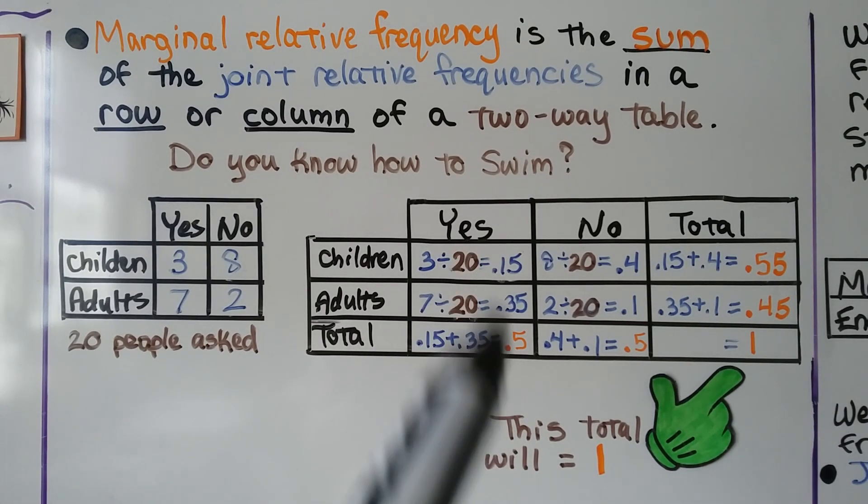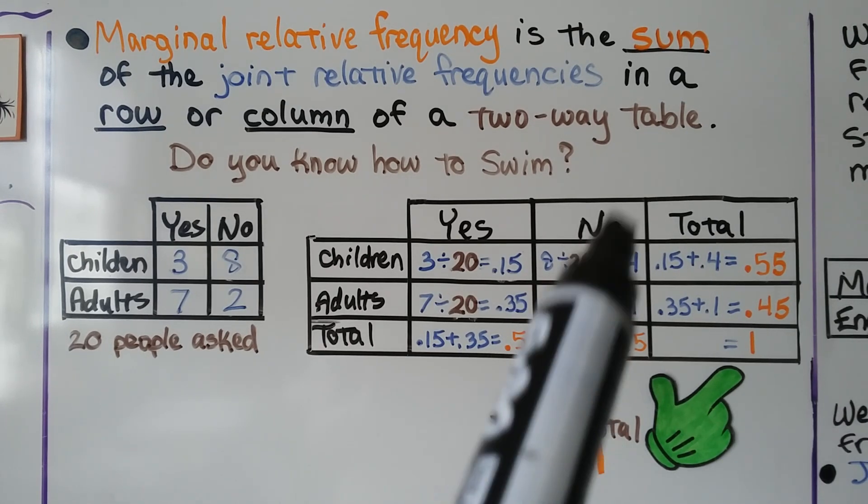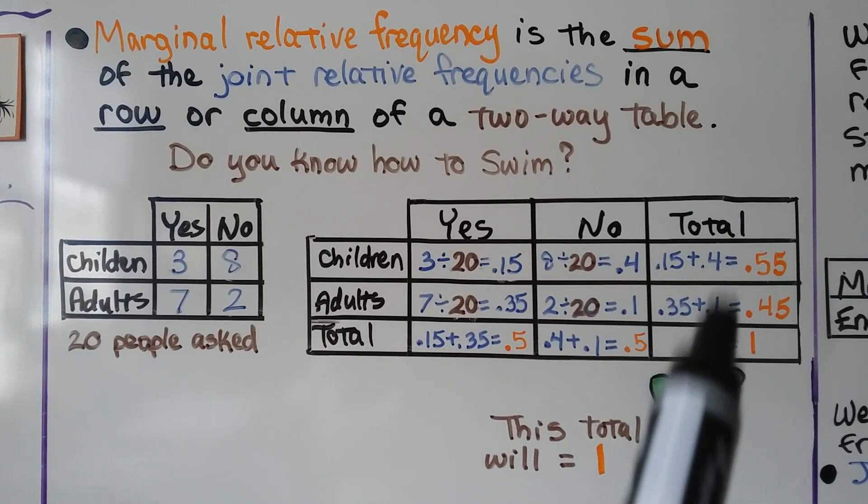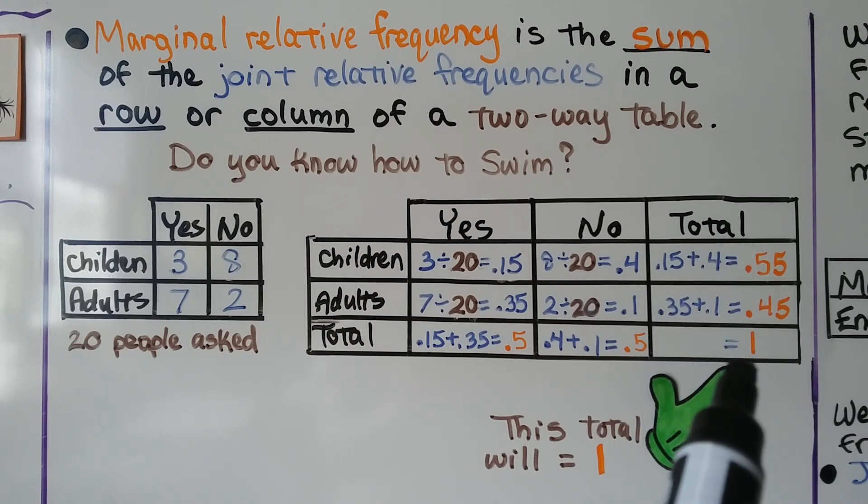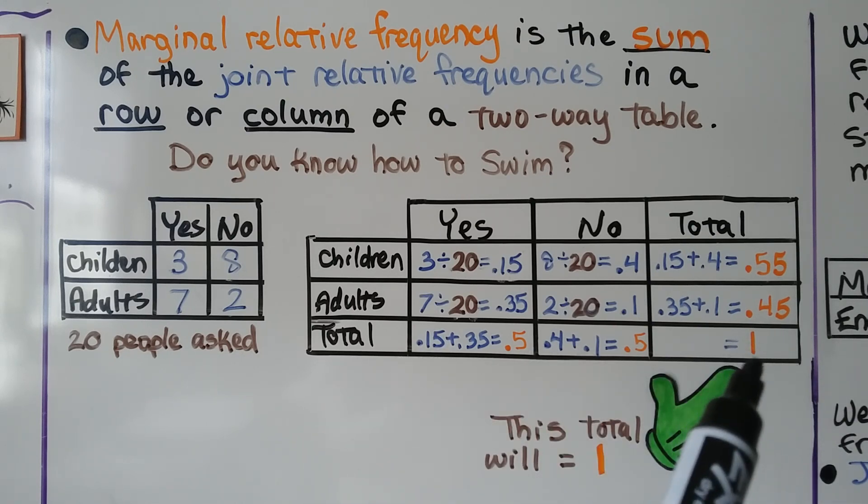When we total the adults and children who said yes we get 0.5. When we total the adults and children who said no we get 0.5. When we total the children and adults who said yes and no we get one whole, 0.55 plus 0.45. Also when we total the yes and no's we get a one. So this box down here will equal 1.